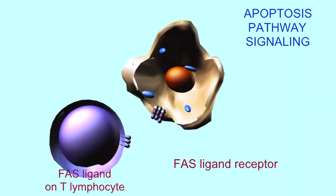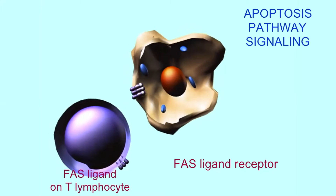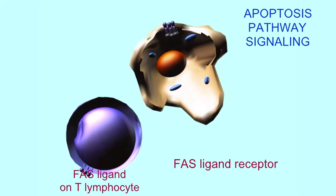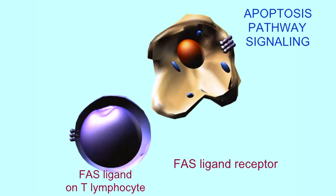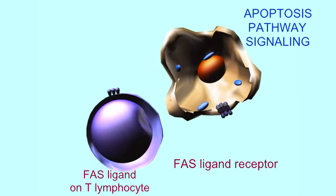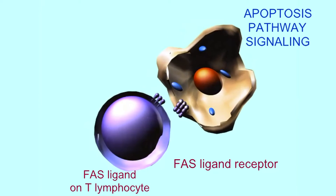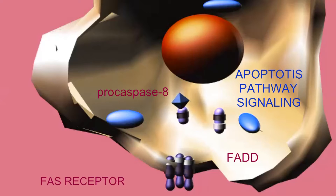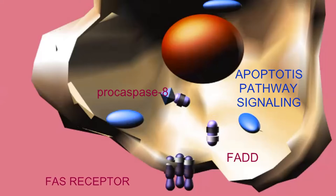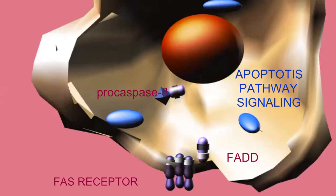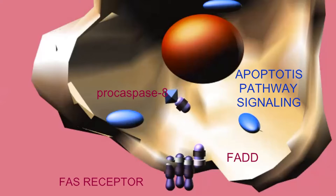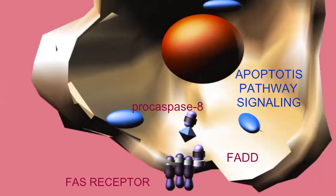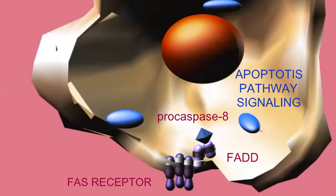Just as there are signals which instruct a cell to divide, there are also signals which instruct cells to undergo apoptosis, or programmed cell death. For example, cells which are expressing the FAS ligand receptor can be instructed by T-lymphocytes, which express the FAS ligand, to begin the apoptotic pathway. The activated receptors interact with cytoplasmic proteins and activate enzymes known as caspases by cleaving a portion and converting the procaspase enzyme into the active caspase.